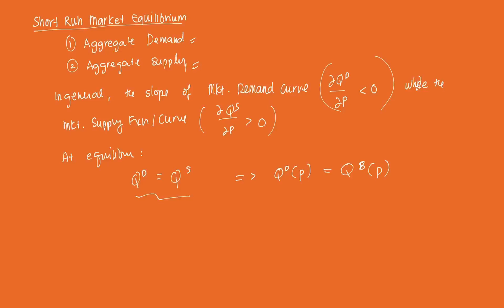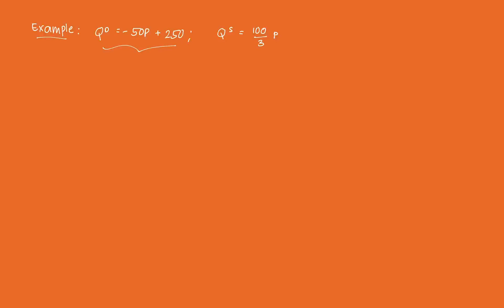To illustrate that, let's have an example — and if you've taken high school econ, this should be very familiar. Say you were given a market demand function: QD = −50P + 250, and a market supply function: QS = (100/3)P. The condition for short-run equilibrium is QD(P) = QS(P), so: −50P + 250 = (100/3)P.